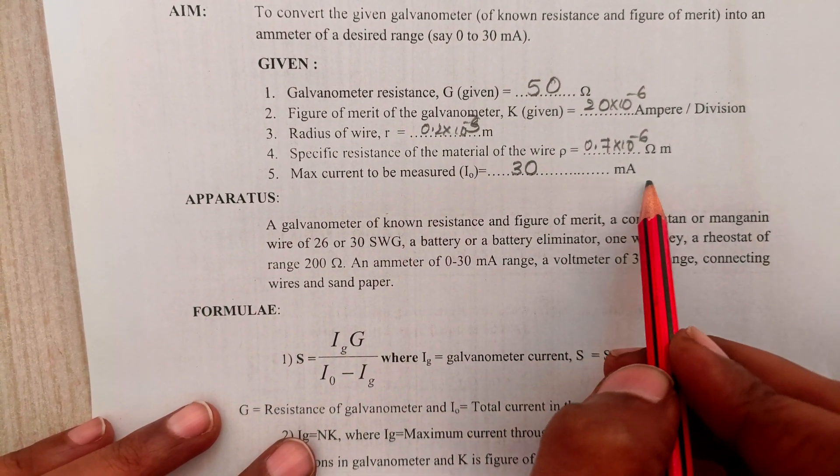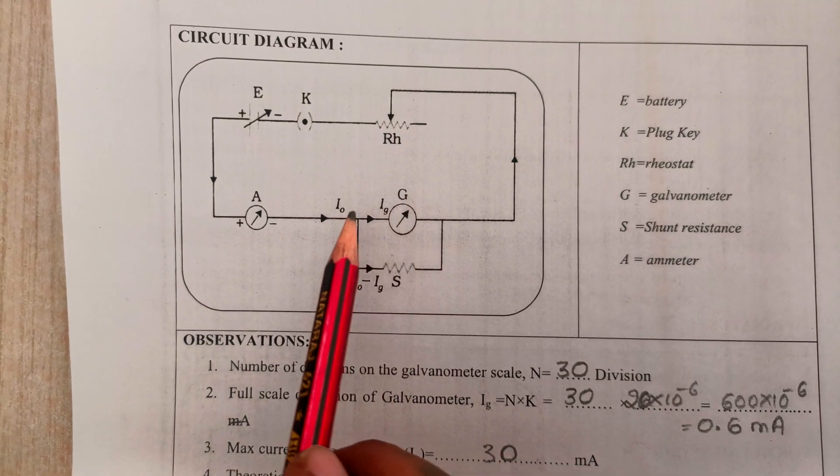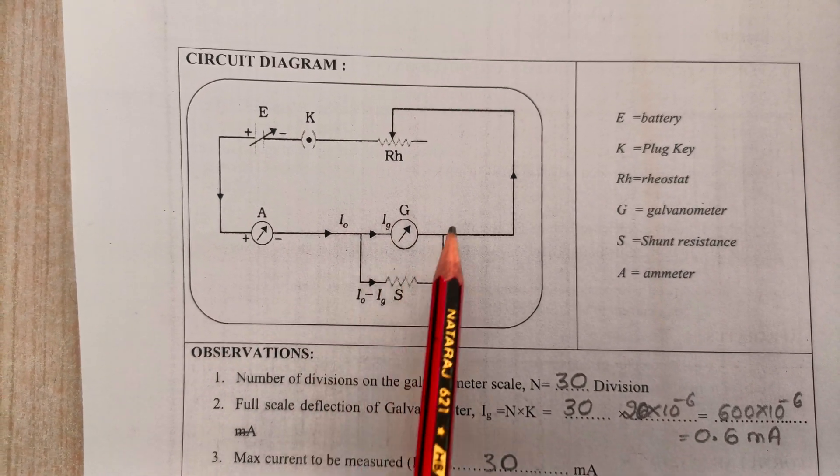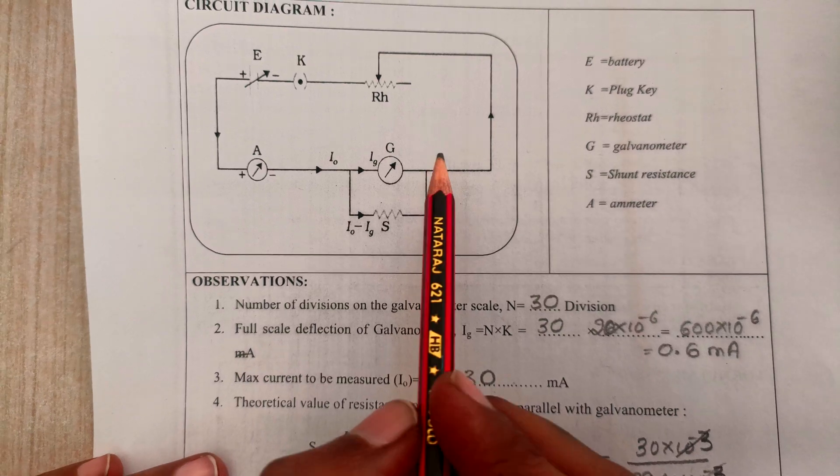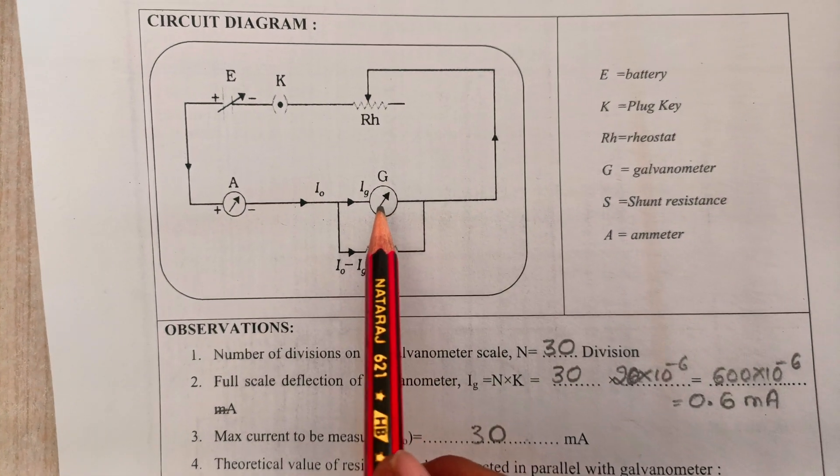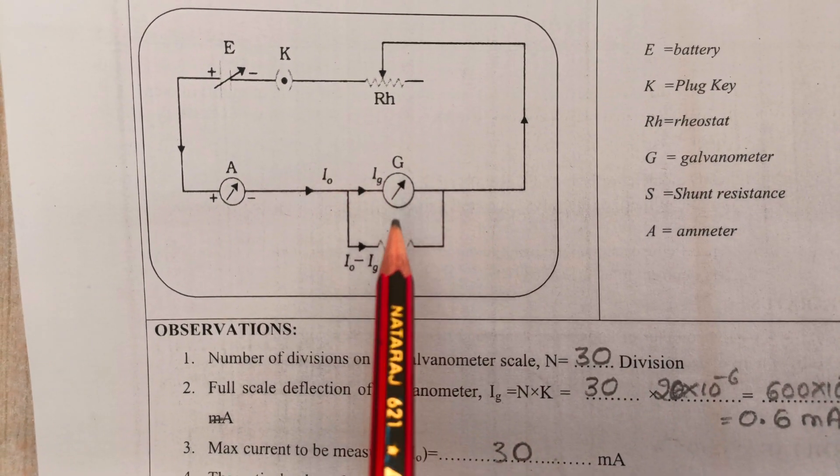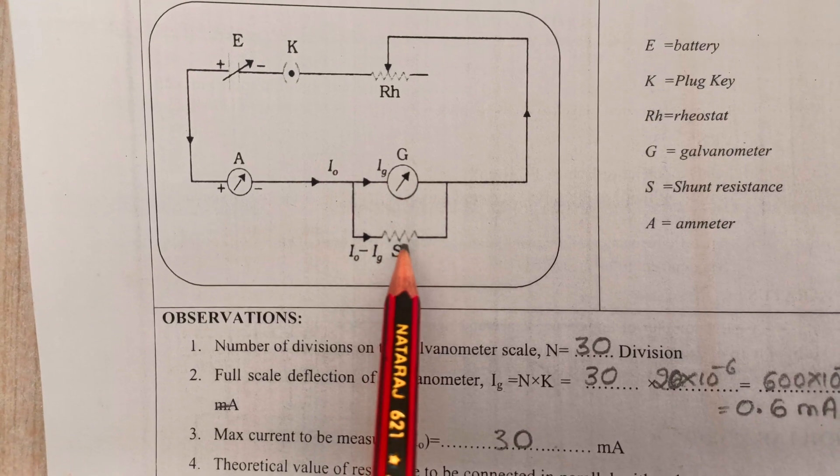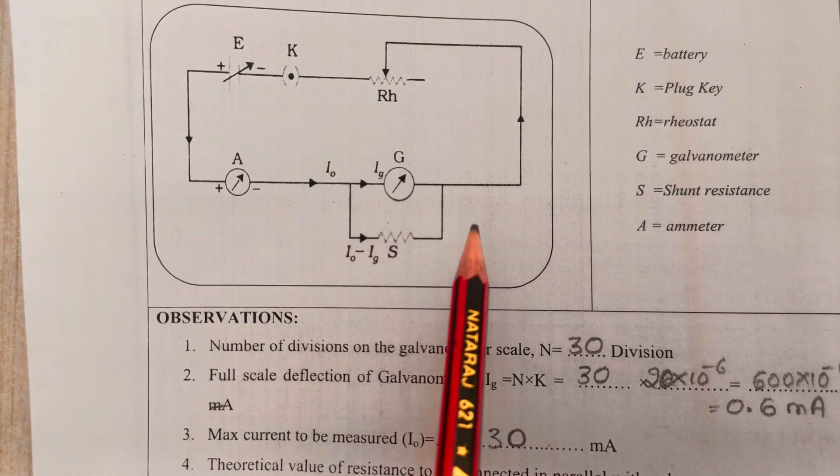The circuit for doing the experiment is as follows. The main thing we need to note is that the galvanometer is connected in parallel with the shunt resistance.